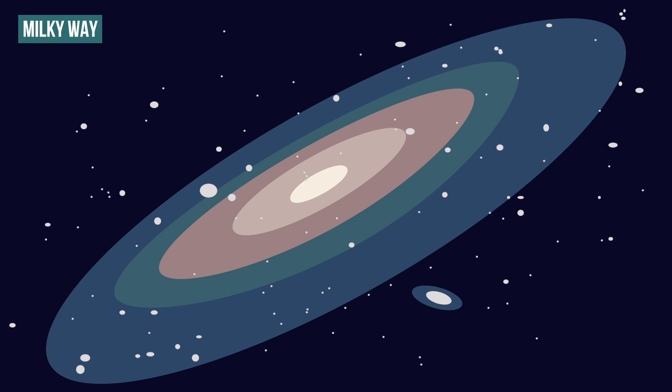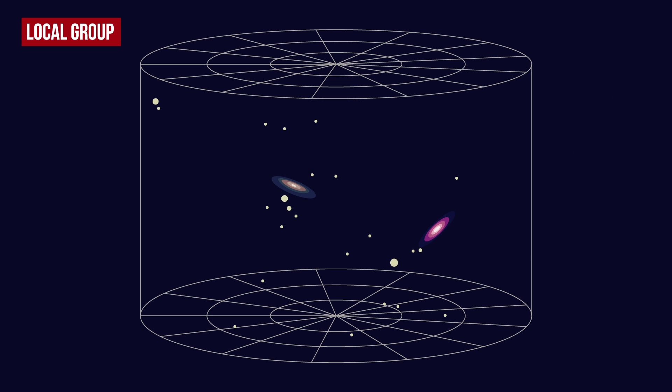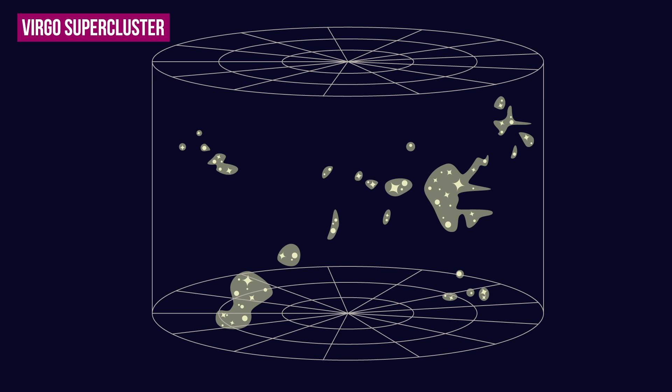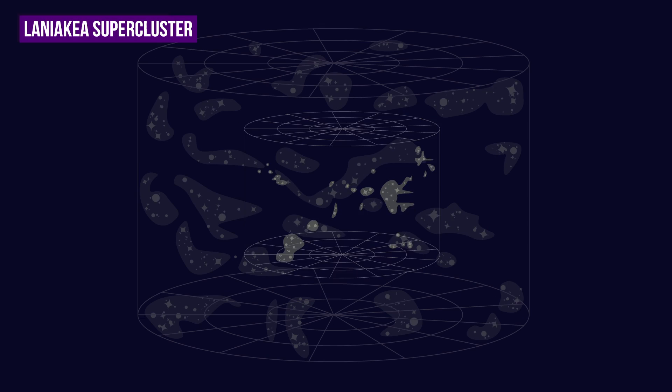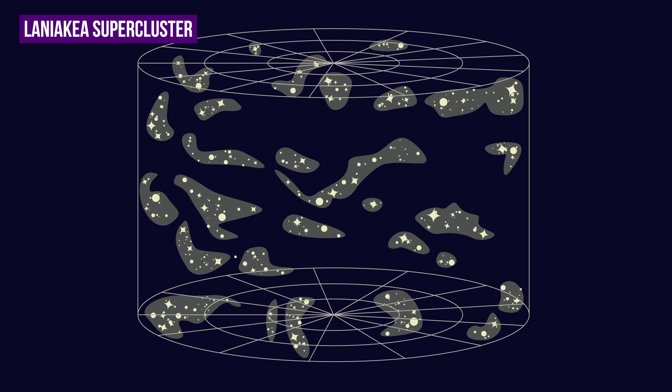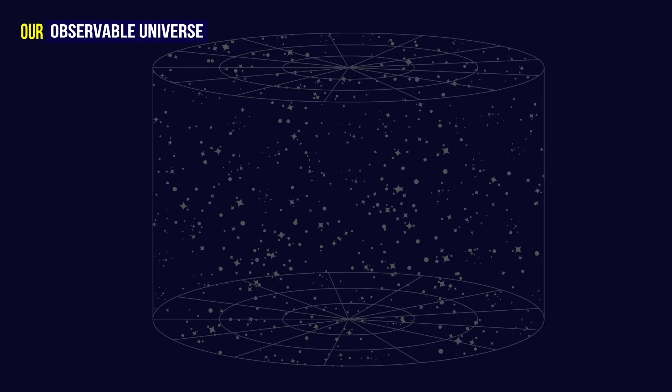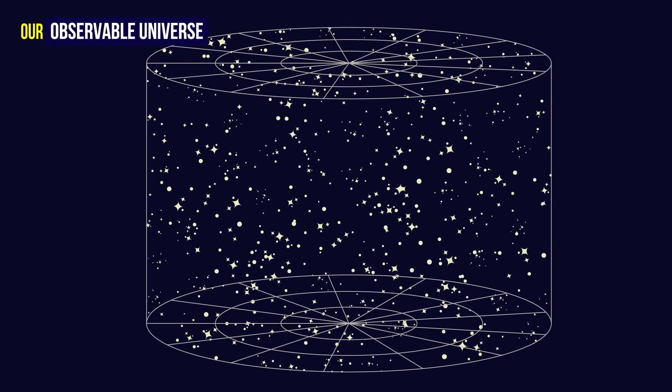However, the Milky Way is only one of the galaxies located in a local group. This group of galaxies is located, amongst others, in the Virgo supercluster, which itself is located in a bigger supercluster of galaxies, the Laniakea supercluster. Finally, this supermassive supercluster is located, amongst others, in our observable universe, which is constantly expanding.